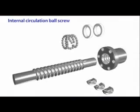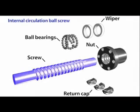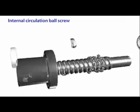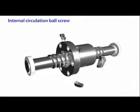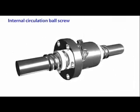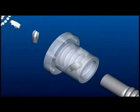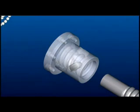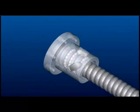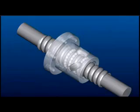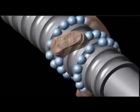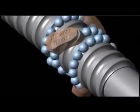Internal circulation ball screws are composed of a screw, nuts, ball bearings, return caps, and wipers. The bearings circulate in single circles. The return cap spans two adjacent bearing races, forming a single closed circuit. Because the return cap is installed within the nut, this type of ball screw is known as an internal circulation ball screw. The return cap forms a return channel for the bearings and ensures that the movement of the bearings follows a closed circuit.